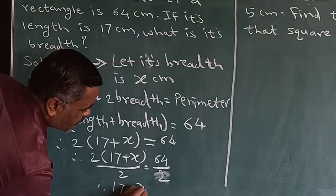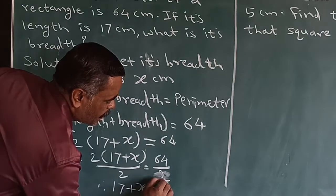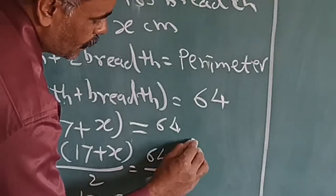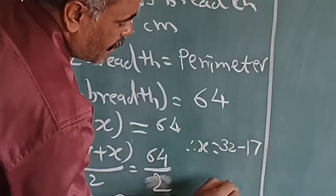64 divided by 2 is equal to 32. So, 17 plus x is equal to 32 and therefore, x is equal to 32 minus 17.